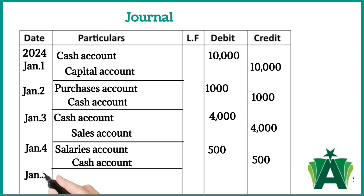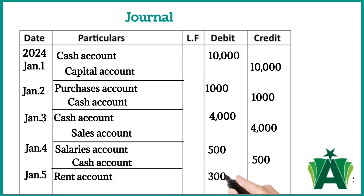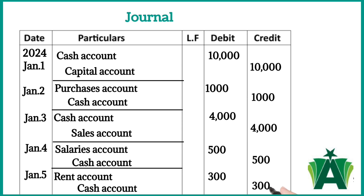Paid rent $300. Rent account is debited — expense increases in the business. Cash account is credited — the value of cash decreases in the business.